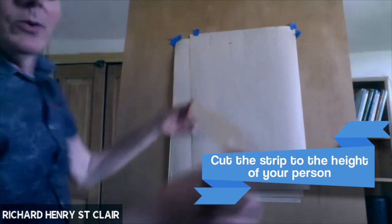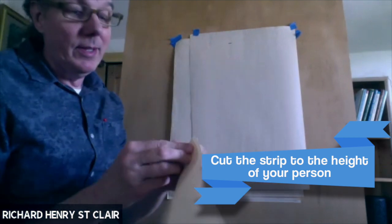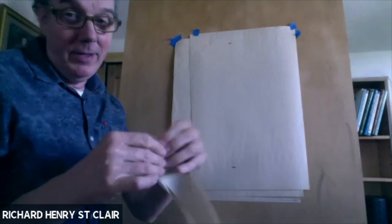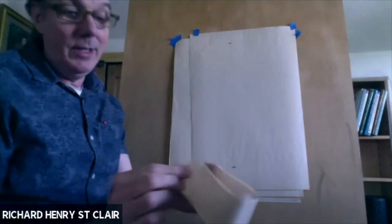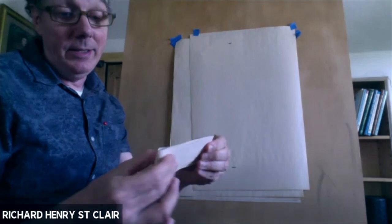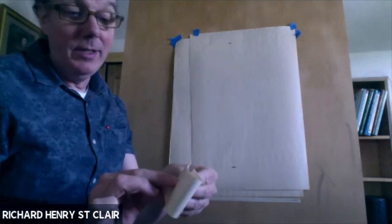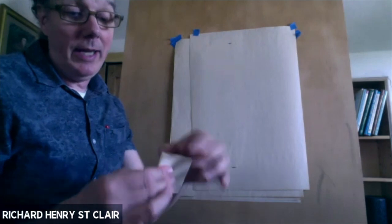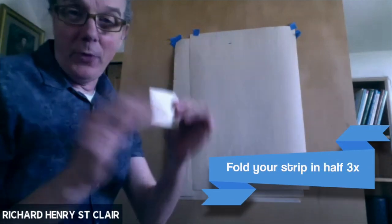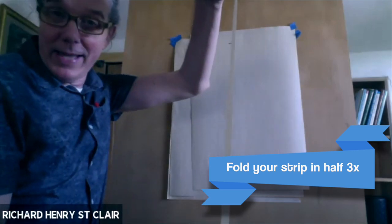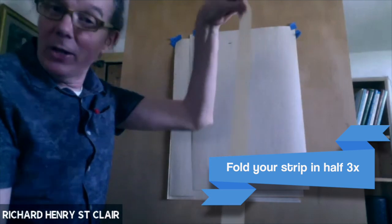So without using math, I'm going to fold my paper in half. Now I have two heads. I'm going to fold it again into quarters. Now I have four heads. And if I fold it again, I folded my paper magically into eight sections. Everybody following along so far?